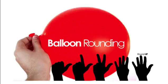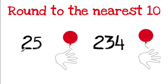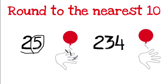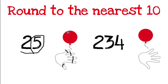We're going to look at another way to check how to round — it's called balloon rounding. When I round to the nearest 10, I underline the 10s place and circle the number in the 1s. Like holding a balloon, I have 5 fingers holding a balloon, and I count and let go of one finger at a time. I count to 5 — 1, 2, 3, 4, 5. If I've let go of all my fingers, the balloon goes up, which means this 2 will go up to a 3, and this stays a 0 — it rounds to 30.